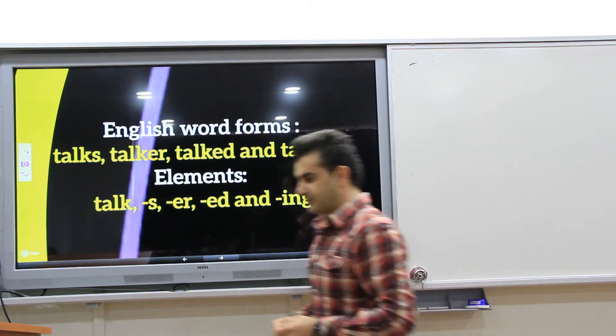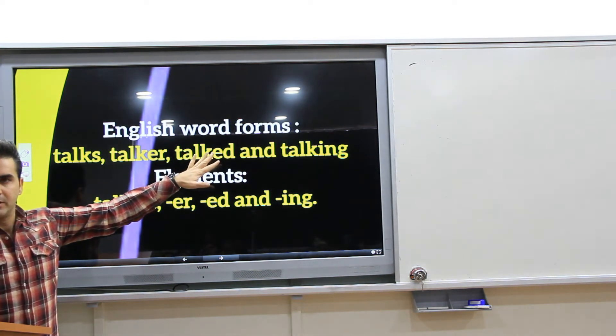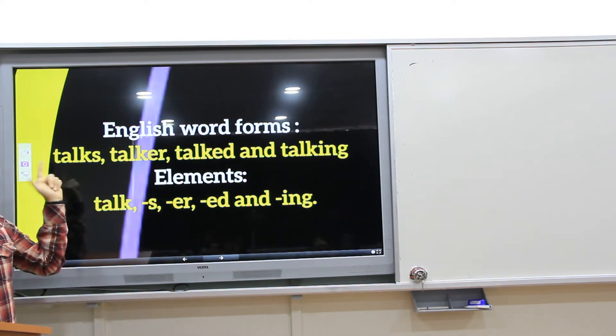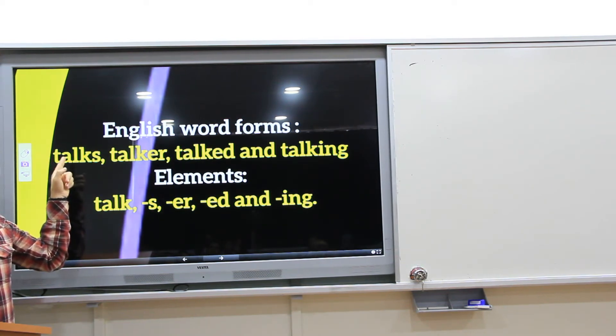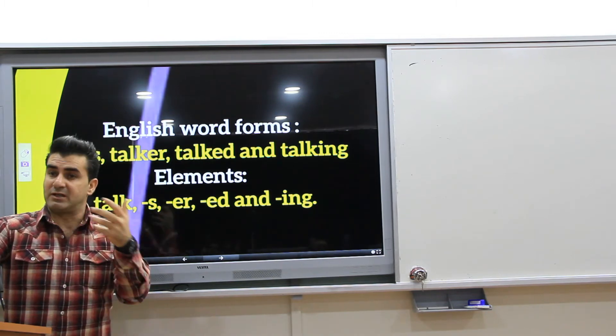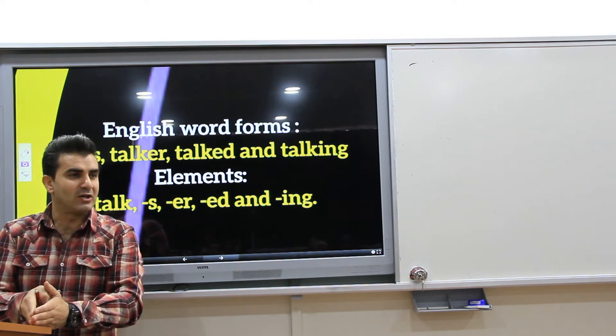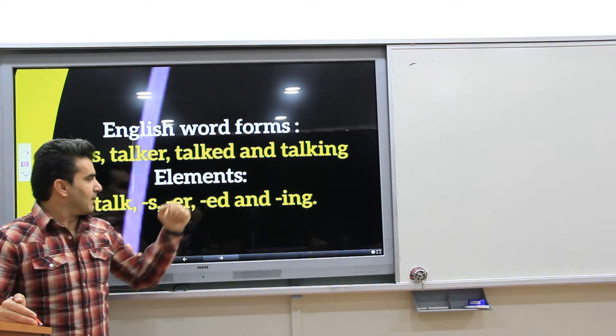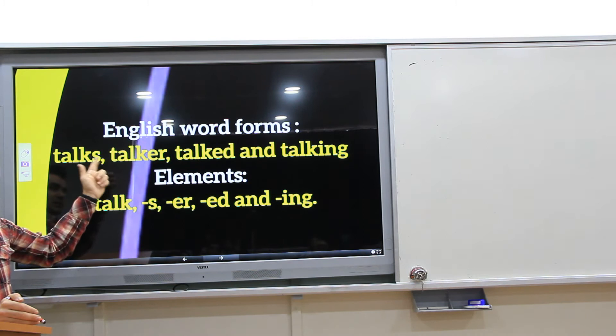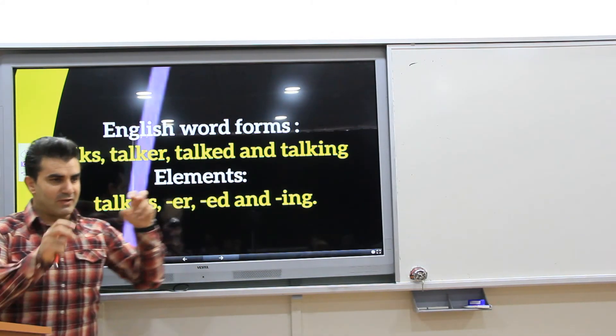For example, English word forms. Talks, talker, talked, and talking. These are forms produced by combining individual sounds, right? For example, before we talked about the t sound, and then ah, vowel sound, and then consonant k sound, and then s sound. We learned about how we produce them individually, separately. Then we combine them, like, in this form, t, ah, l, k, and s. We say talks. Or, talker, talked, and talking. So, the elements here, first, talk, and then here, talks, talker, talked, and talking. These are different elements.